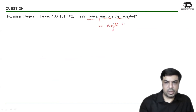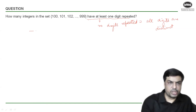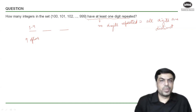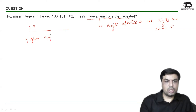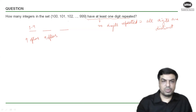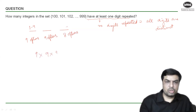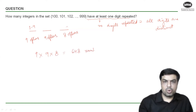If no digits are repeated, all digits are distinct. For three-digit numbers with all distinct digits: the first place has nine options (1 to 9), the second place also has nine options (cannot reuse the first digit, but zero is now allowed), and the third place has eight options (cannot reuse digits from either of the first two places). So I can form 9×9×8 = 648 numbers with all distinct digits.